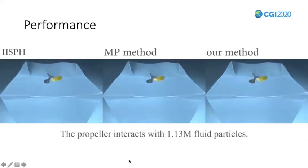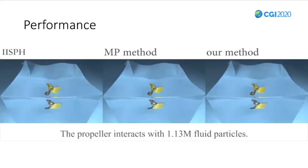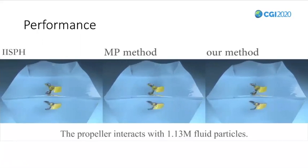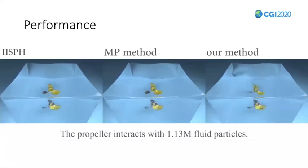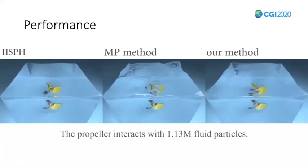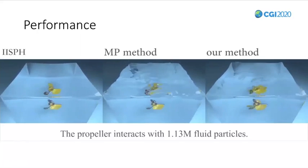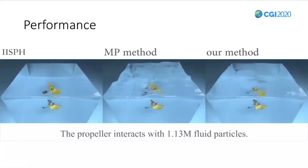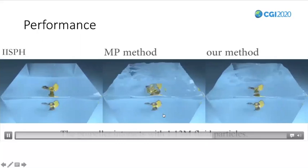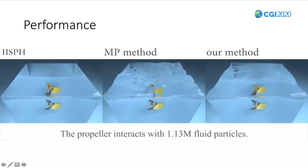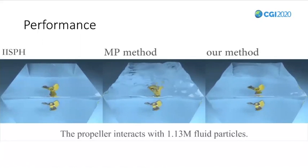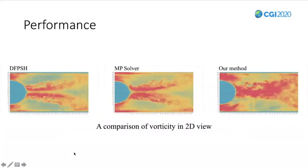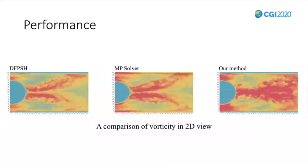This is the popular rotation experiment. The left one is the simulation result using IISPH. The middle one is the simulation result using MP method. And the right one is the simulation result using IISPH method. Once the pipeline is rotating, there are some turbulence generated over the surface.